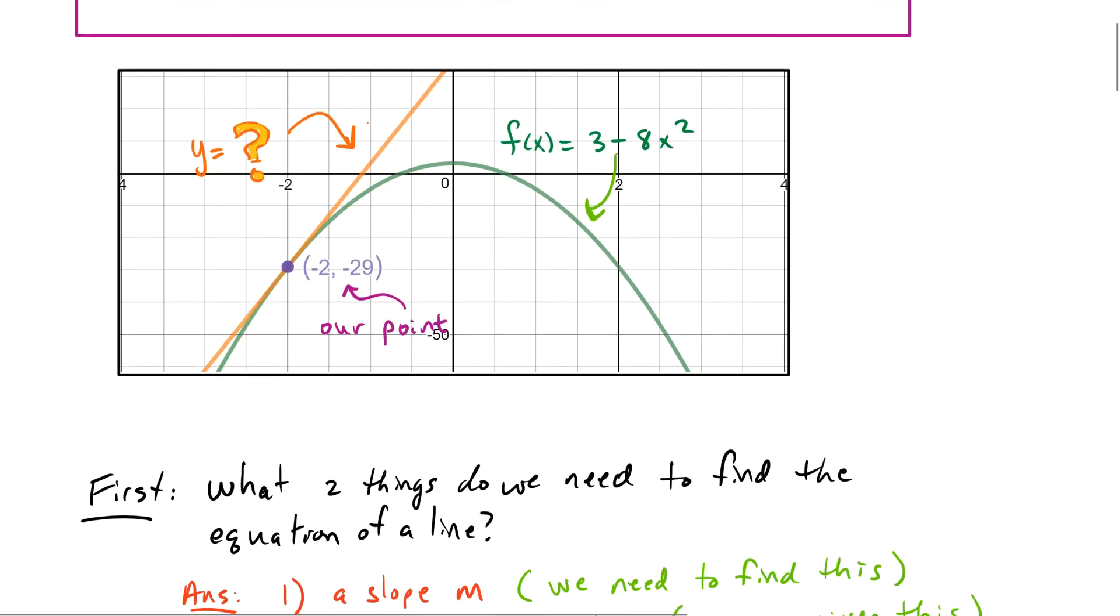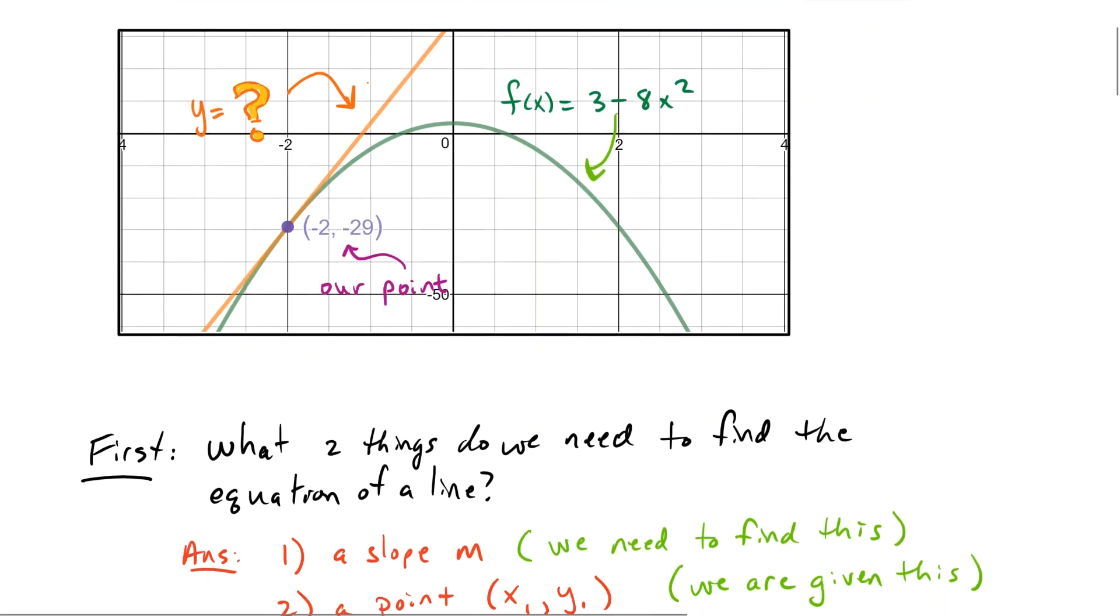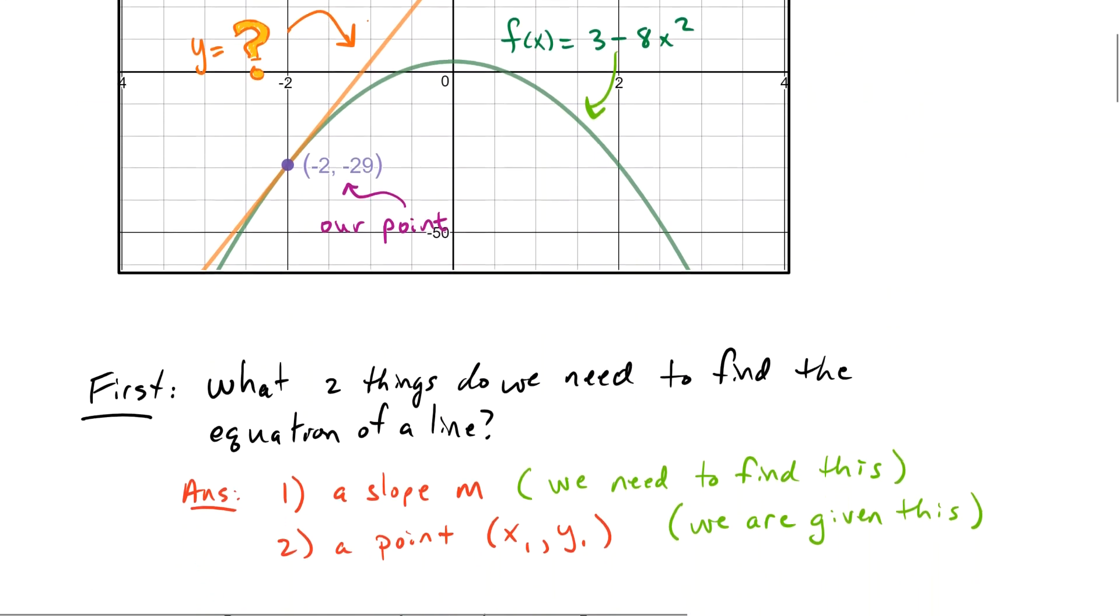So what do we need when we're looking for the equation of a line? If we think back to algebra, we know that we need two things. We need a slope, which we don't have, and we need a point, which we do have. Our point is negative 2, negative 29. So we have that already. We just need the slope at x equals negative 2.